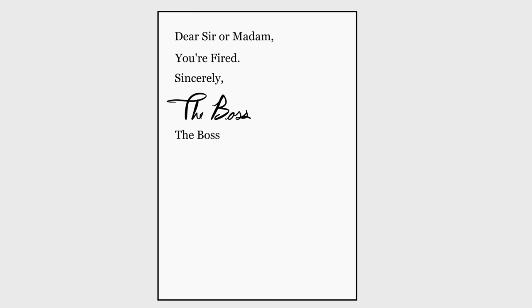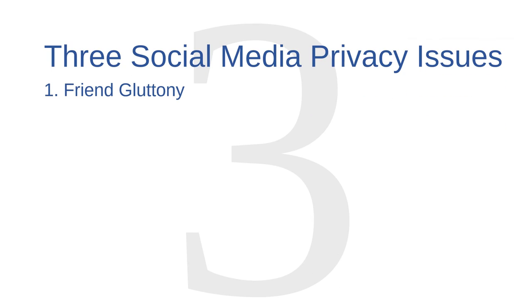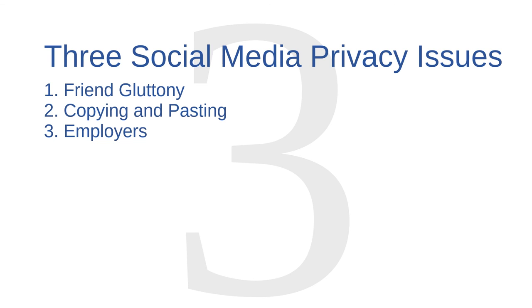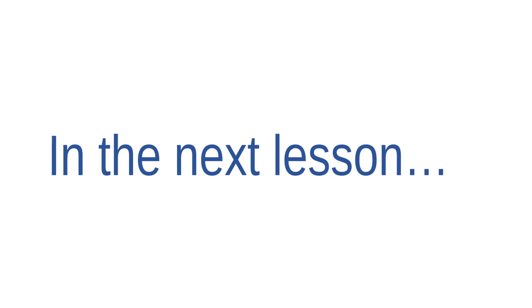Let's review. In this lesson, we discussed three social media privacy issues: friend gluttony, copying and pasting, and issues with employers. In the next lesson, we'll discuss how these privacy trade-offs on social media can lead to trade-offs in personal security. In particular, we'll look at how burglars use social media to choose their targets, and we'll look at how some cyber attackers use social media to spread malware to users like you.